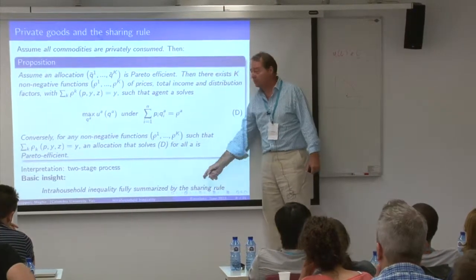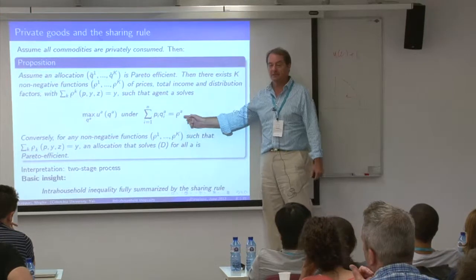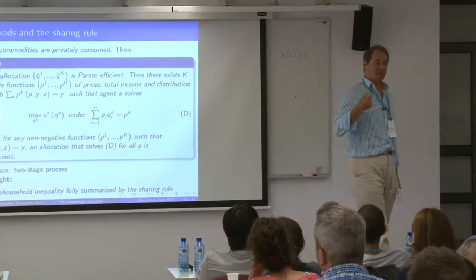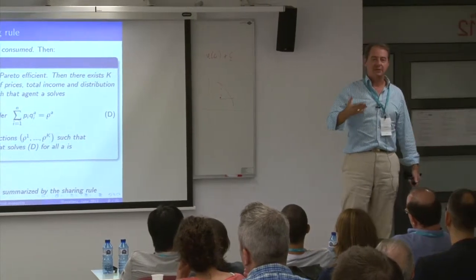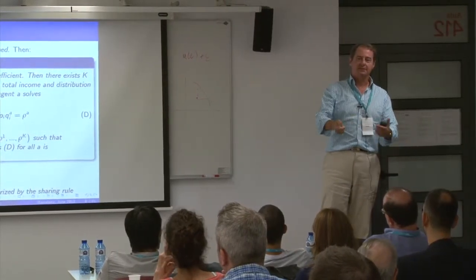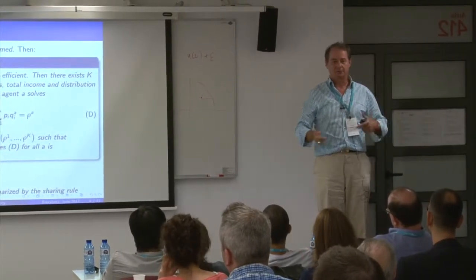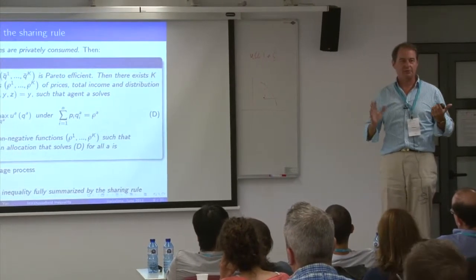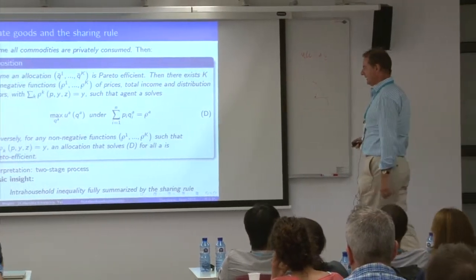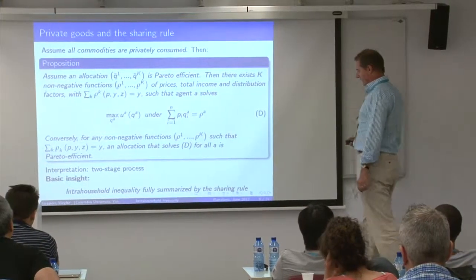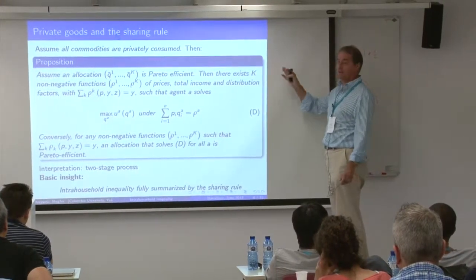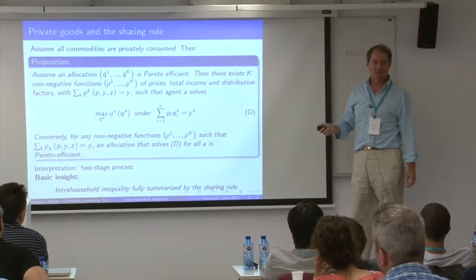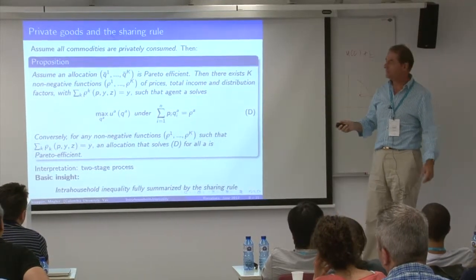If you want to measure inequality, just look at this: the perfect measure of inequality is how much is he spending and how much is she spending. In practice they may not literally transfer money — it could be I do the shopping — but conceptually there is no ambiguity. The conceptual problem starts with public goods.